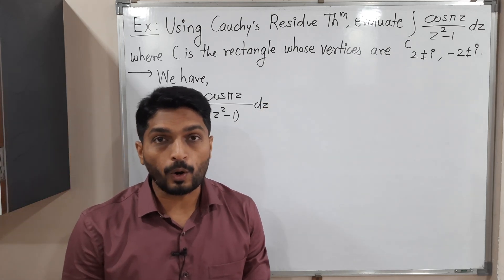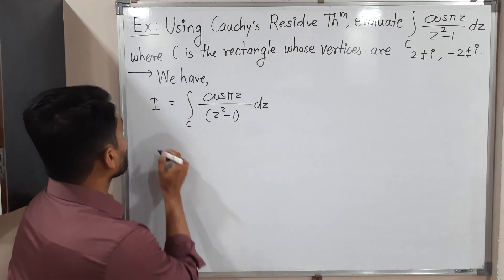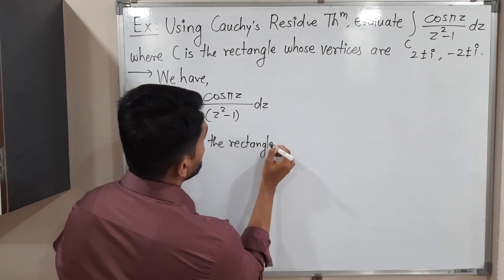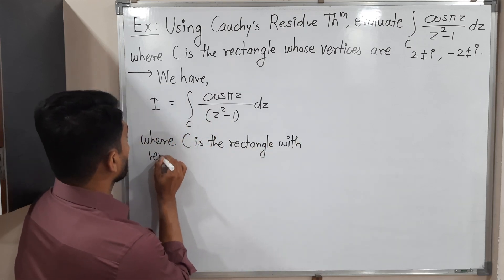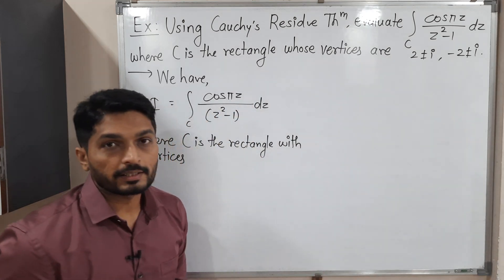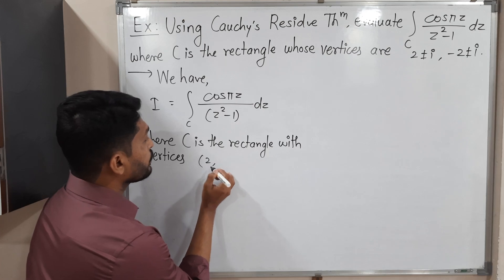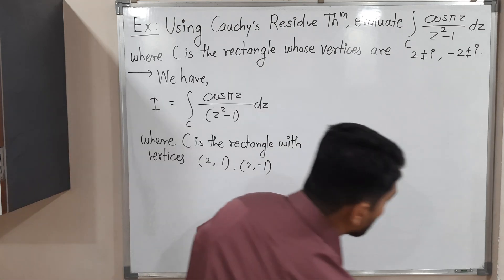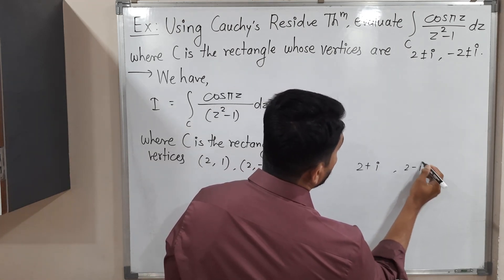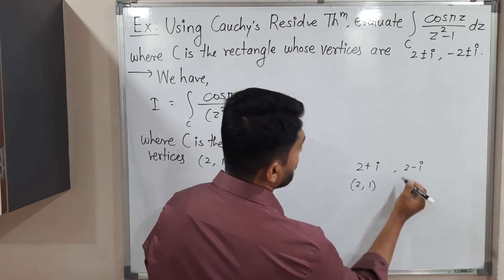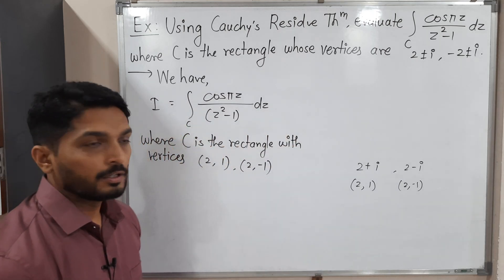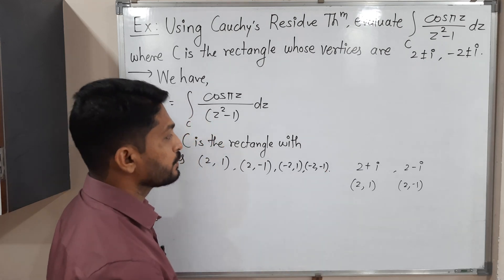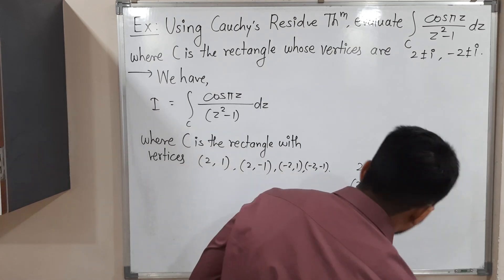The most important thing here is the curve C, so let us draw that curve C first, then we will solve the problem. C is a rectangle with vertices: they have mentioned 2 ± i, meaning 2 + i and 2 - i (real part 2, imaginary part ±1), and the remaining two points will be -2 + i and -2 - i.